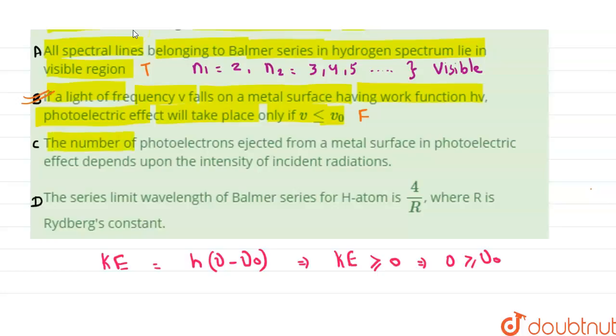the number of photoelectrons ejected from a metal surface in the photoelectric effect depends upon the intensity of the incident radiation. This is true because the number of photoelectrons is a function of the area covered by the incident light. More area covered means more photoelectrons emitted. So this statement is true and is not the required answer. Statement D is: